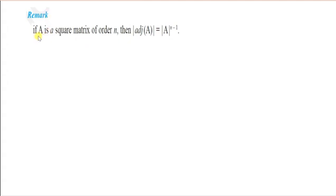Another important property: if A is a square matrix of order n, then det(adj A) = |A|^(n−1). This is a frequently tested result. We will cover questions based on this in the next lecture. That's all for today. Thank you.